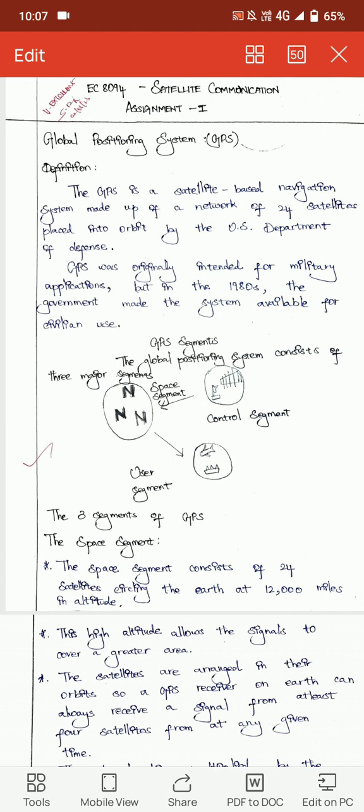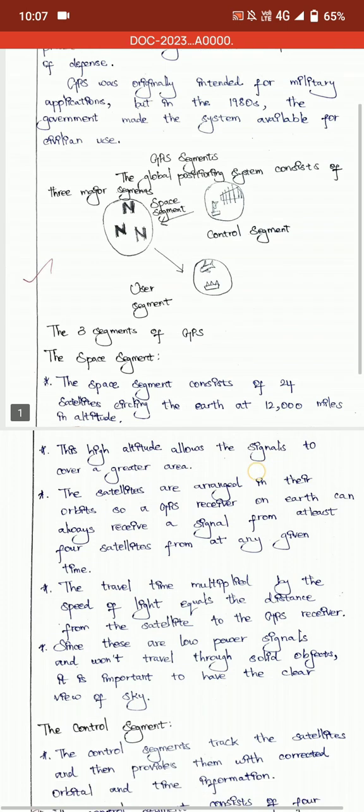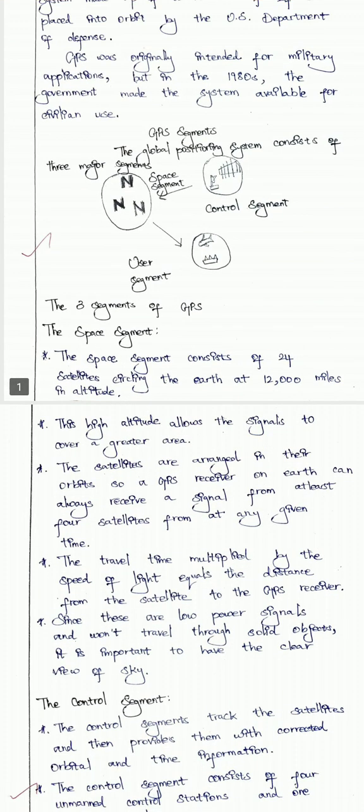Next, GPS has three major segments: the space segment, the control segment, and the user segment.